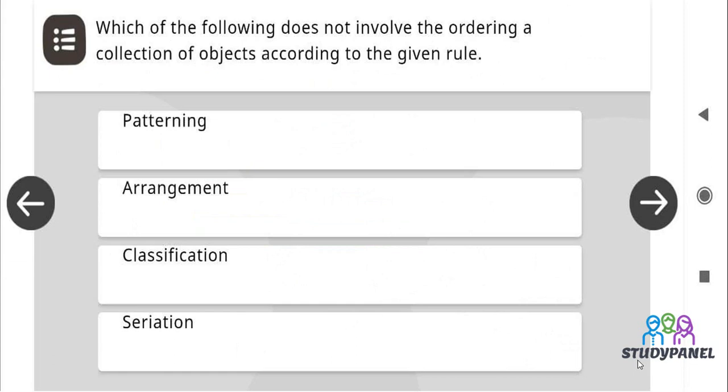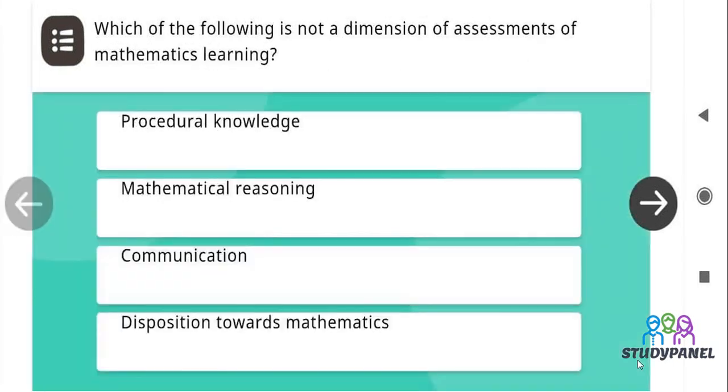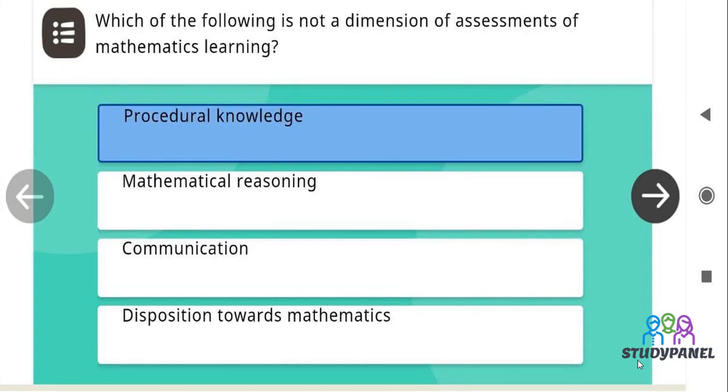Which of the following does not involve the ordering of a collection of objects according to the given rule? The correct answer is classification. Which of the following is not a dimension of assessments of mathematics learning? The correct answer is procedural knowledge.